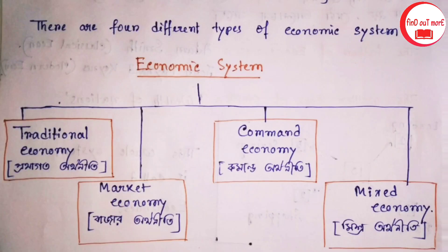Now, there are four different types of economic system: traditional economy, market economy, commodity economy, and mixed economy.